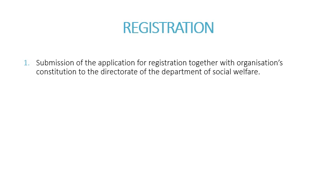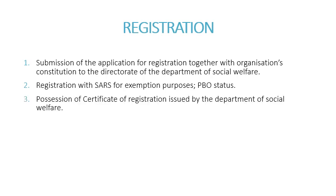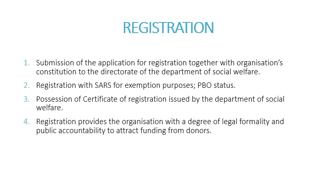Before an NPO can commence its activities, the NPO Act requires the organization to submit an application for registration together with its organizational constitution to the directorate of the Department of Social Welfare. The organization should also register for tax exemption purposes and must be in possession of a certificate of registration issued by the Department of Social Welfare. This registration provides the organization with a degree of legal formality and public accountability to attract funding from donors.